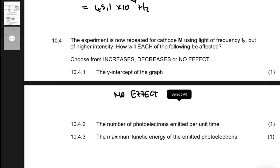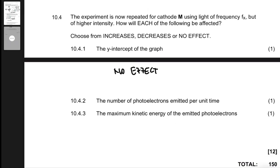Question 10.4.2 asks about the number of photoelectrons emitted per unit time. This will increase when you increase the intensity. One photon ejects only one electron, so increasing intensity increases the number of photon packets incident on the material, meaning more electrons are ejected per unit time — while EK max remains the same.